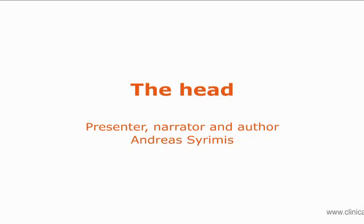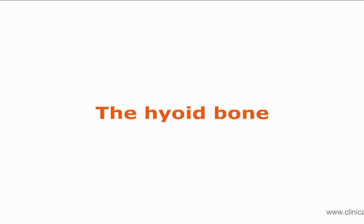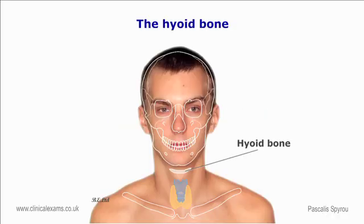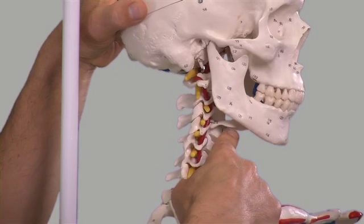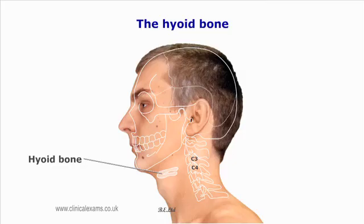The head — the hyoid bone. This is a horseshoe-shaped bone situated in the anterior midline of the neck between the mandible and the thyroid cartilage. It lies at the level of the third cervical vertebra. It is suspended from the tips of the styloid process of the temporal bones by the stylohyoid ligaments.